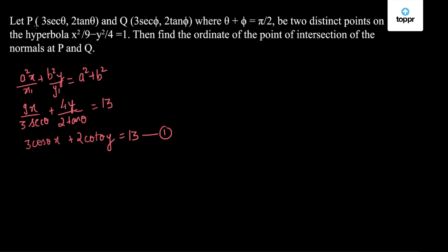Q is of similar type. The coordinates of Q and P are of similar type. Just the angle θ is replaced by φ. So we have normal at Q is of the form 3cosφ x + 2cotφ y = 13.